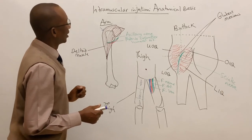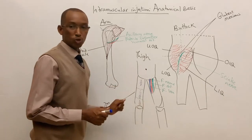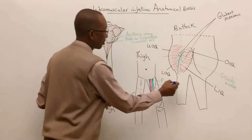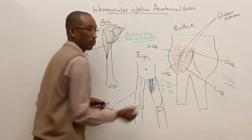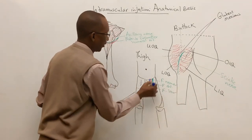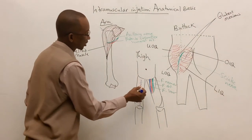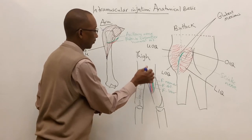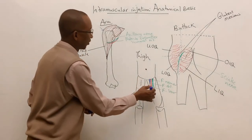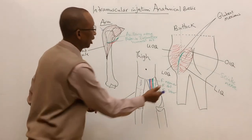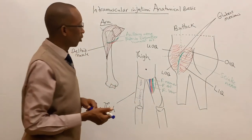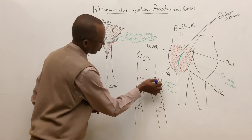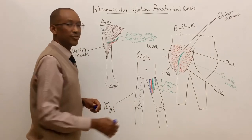In the thigh, the femoral triangle contains three important structures: the femoral nerve on the lateral side, the femoral artery in the middle, and the femoral vein on the medial side of the femoral artery. Therefore, the anterior aspect of the thigh is not a good injection site. Similarly, the lateral part of the anterior one-third of the thigh is also unsuitable, as the lateral cutaneous nerve of the thigh exits the abdomen to supply the lateral thigh.